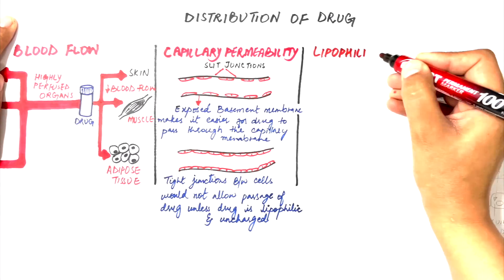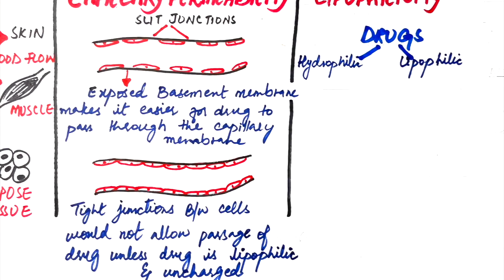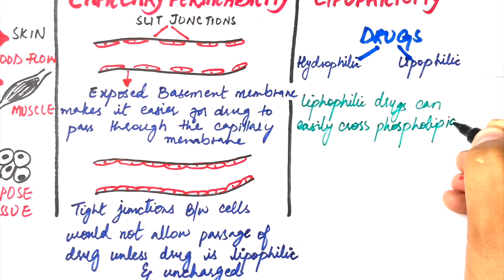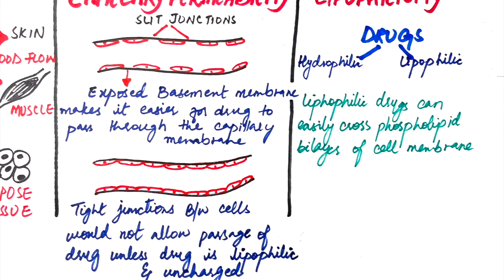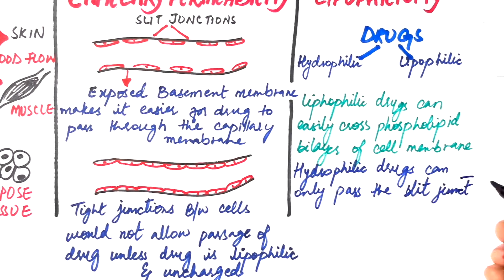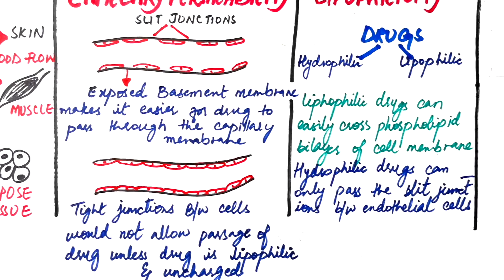Looking at the lipophilicity, drugs can be either hydrophilic or lipophilic. Lipophilic drugs can easily cross the phospholipid bilayer of cell membranes through the process of diffusion, which we just discussed in our previous video of drug absorption. On the other hand, a hydrophilic drug cannot pass throughout the cell membrane, but they can pass through the slit junctions of the endothelial cells.